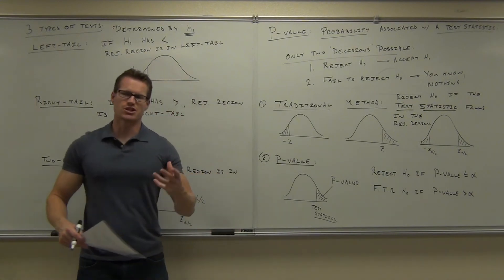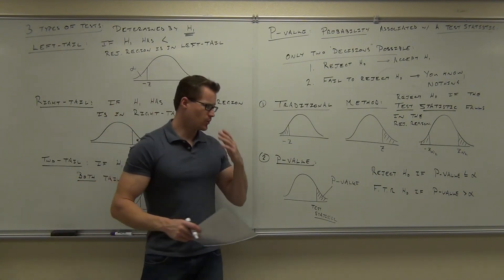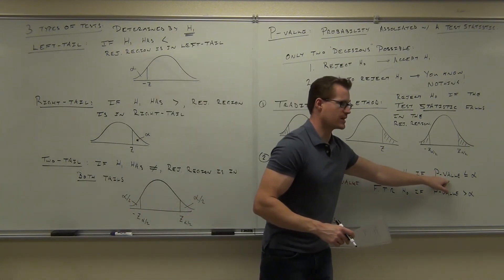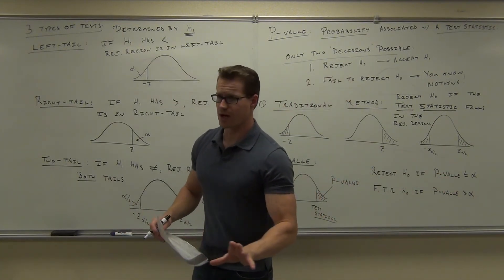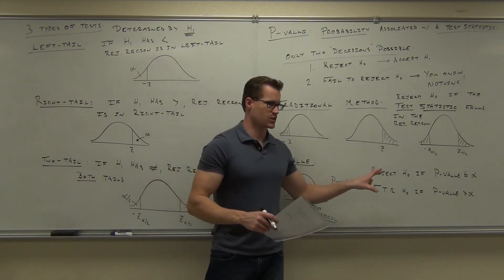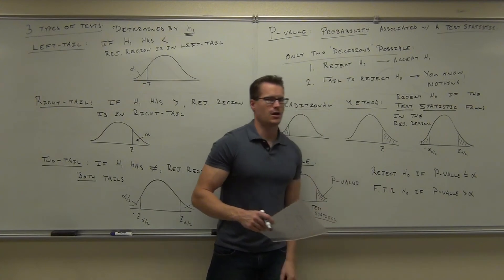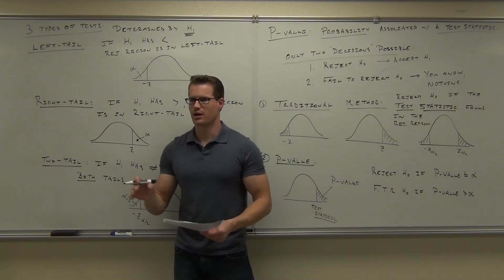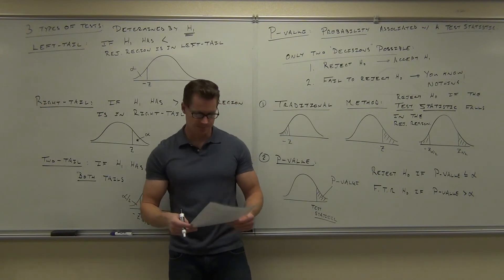Alpha is your significance level — it's how sure you want to be. If our area is less than alpha, it says it's rare enough to support the evidence. If it's bigger than alpha, it's not rare enough. It may very well be true, but not according to how significant you want to make this statement.